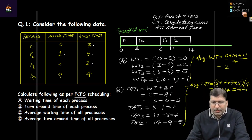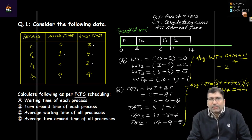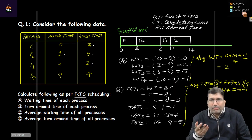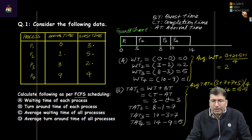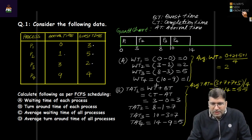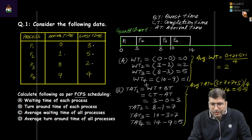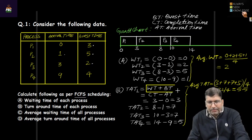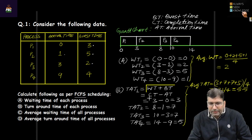I hope with this example you are now clear about calculating waiting time and turnaround time. Please remember these formulas: turnaround time equals waiting time plus burst time, or completion time minus arrival time.